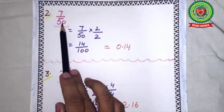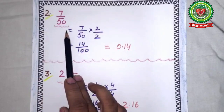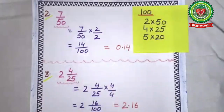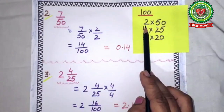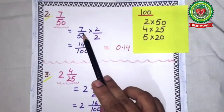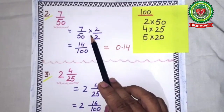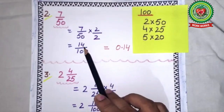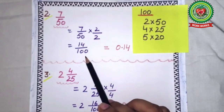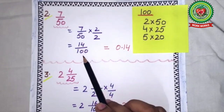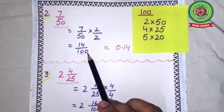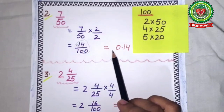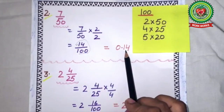The second sum is 7 upon 50. The denominator is 50, so we multiply by 2: 7/50 × 2/2. 7 × 2 = 14, 50 × 2 = 100. Two zeros, shift the point by 2 digits. Answer is 0.14.